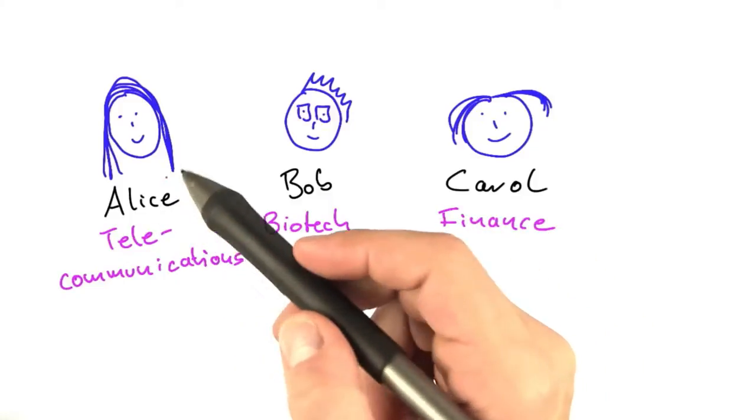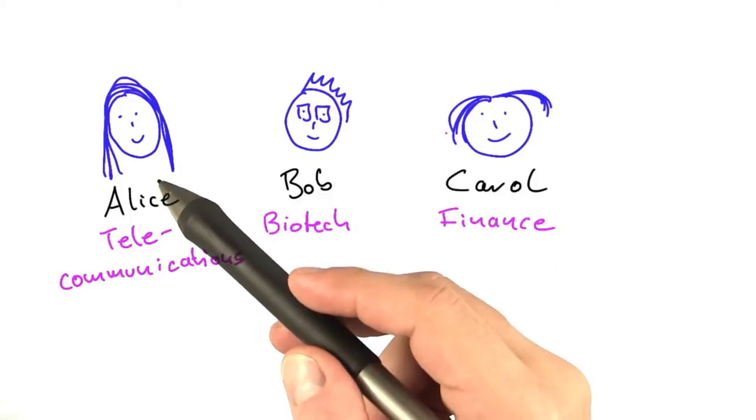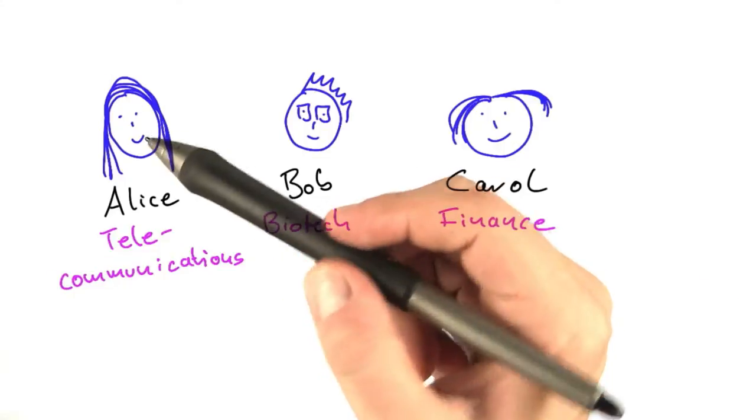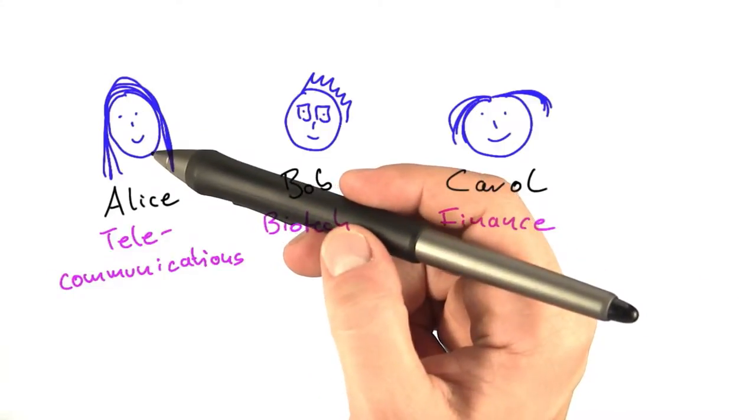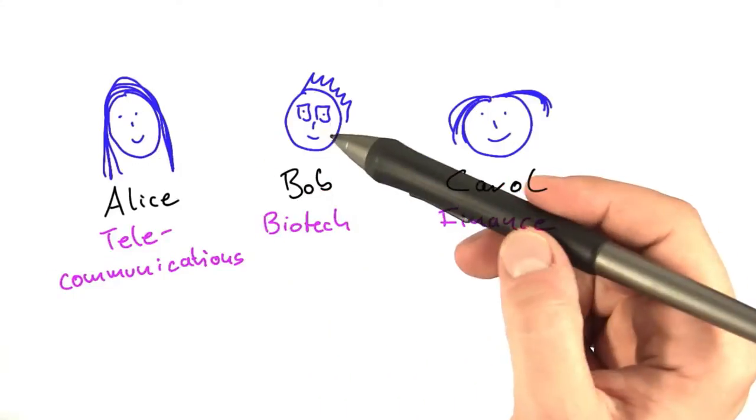In this unit, I'm going to introduce you to three computer problems that will actually turn out to be quite challenging. And I'm going to do this by introducing you to three computer scientists: Alice, Bob, and Carol.